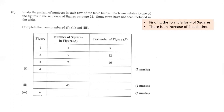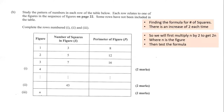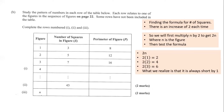First we look at finding the formula for the number of squares. We notice there's an increase of 2 each time, so we'll multiply n — the figure number — by 2 to get 2n, then test the formula. When we do 2×1 we get 2, 2×2 we get 4, and 2×3 we get 6. We realize we are always short by 1.